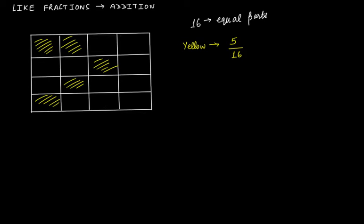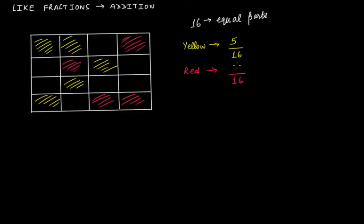Now let's look at the red one. If I take any four blocks shaded with red and ask what fraction these red shaded portions make of the whole, you'll say it's simple: you have 16 equal portions and four are shaded with red, so the fraction is 4 by 16.